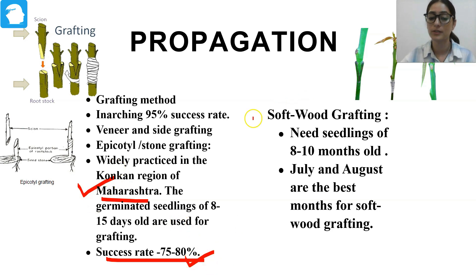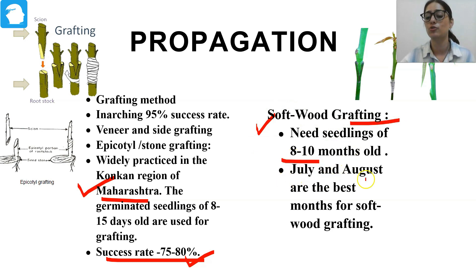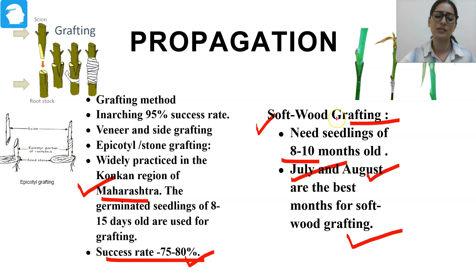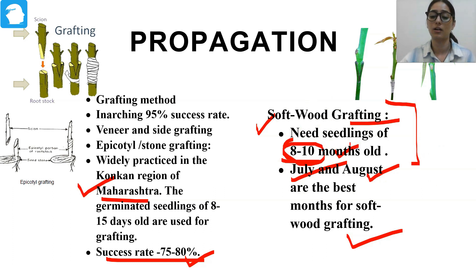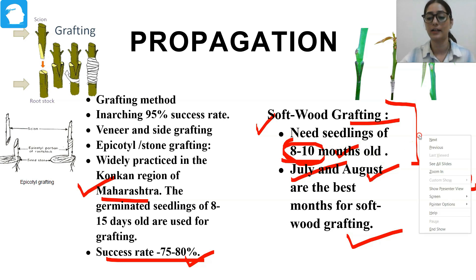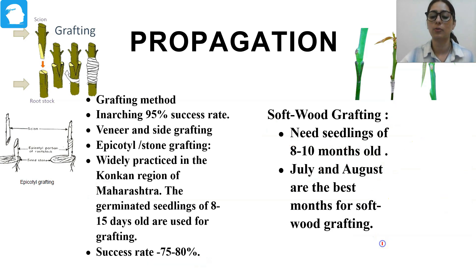The next method is softwood grafting. In softwood grafting, the seedling should be 8 to 10 months old, and the best time for it is July to August. There is another term — hardwood grafting — which is practiced in several other horticulture crops, for example in grape. The difference between softwood and hardwood grafting is the age: in softwood grafting, an 8 to 10 month old seedling is taken, while in hardwood grafting, a one-year-old branch is selected.